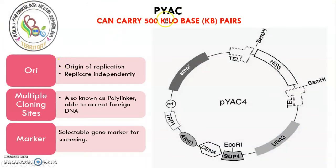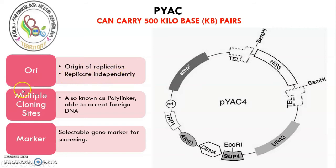The next vector is YAC — yeast artificial chromosome. It can carry even larger DNA molecules, up to 500 kilobases. It has the same features: an origin of replication (ORI) which allows it to replicate independently, a multiple cloning site also known as the polylinker where it accepts foreign DNA, and a genetic marker which is useful in screening.